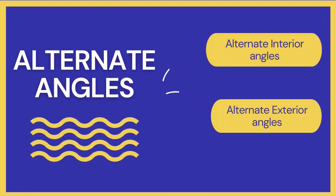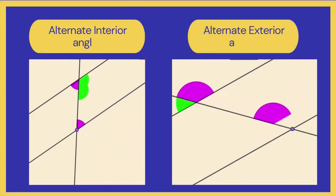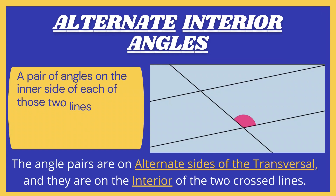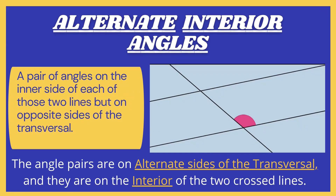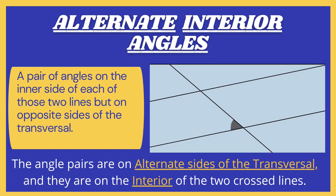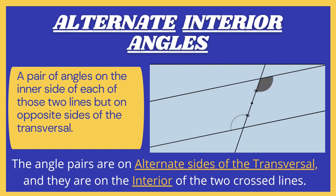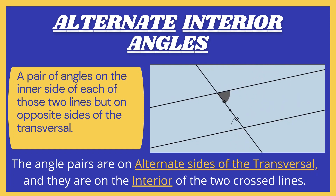The next pair of congruent angles is alternate angles. Alternate angles are categorized in two parts: alternate interior angles and alternate exterior angles. Alternate interior angles are a pair of angles on the inner side of each of the two lines but on opposite sides of the transversal. To help you remember this, these angle pairs are on alternate sides of the transversal and they are on the interior of the two crossed lines. There will be two pairs of alternate interior angles. Alternate angles are always equal to each other — even if I change the slope of the transversal or the distance between the parallel lines.